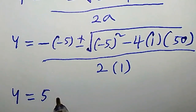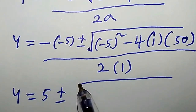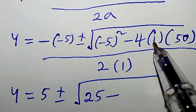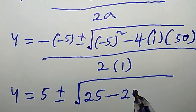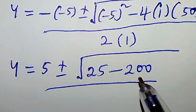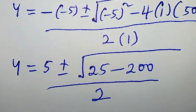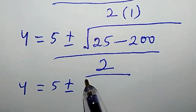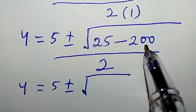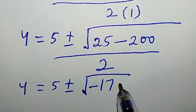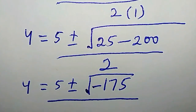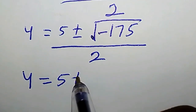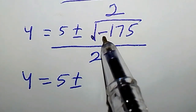So we have y equal to minus b, and b is minus 5, so minus times minus 5 is 5, plus or minus square root of b squared — that is minus 5 squared, which is 25 — minus 4 times a, which is 1, times c, which is 50, that is 200. Everything divided by 2 times 1, that is 2. So y equals 5 plus or minus square root of 25 minus 200, which is minus 175.